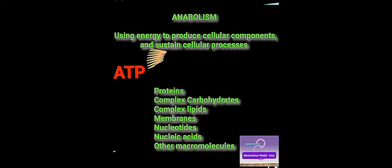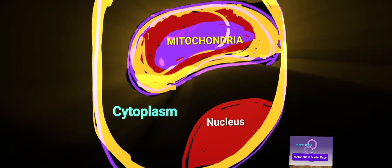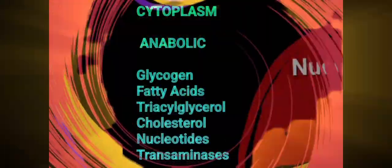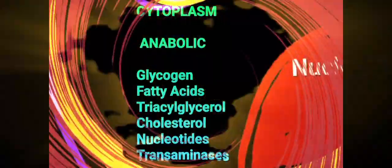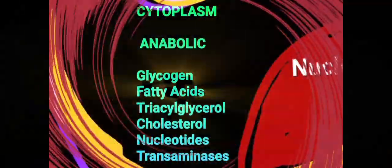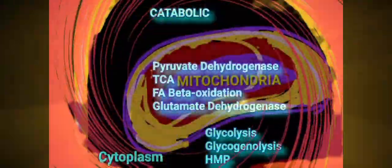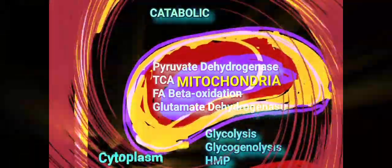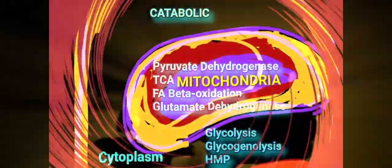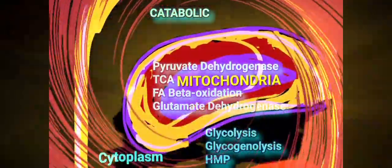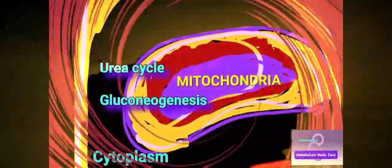Metabolism is compartmentalized. Some of the most important anabolic pathways occur in the cytoplasm, including glycogen, fatty acid, triacylglycerol, cholesterol, nucleotide, and amino acid biosynthesis. Some of the most important catabolic processes occur in the mitochondria, including pyruvate dehydrogenase, TCA cycle, fatty acid beta oxidation, and glutamate dehydrogenase, with glycolysis and the HMP pathway occurring in the cytoplasm. Notably, the urea cycle and gluconeogenesis start in the mitochondria and continue in the cytoplasm.